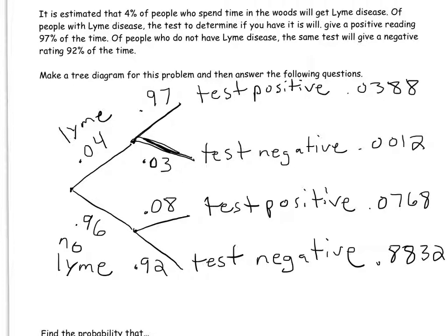The last thing to check is that those four probabilities at the end of the tree should add up to 1. If I go ahead and check: 0.0388 + 0.0012 + 0.0768 + 0.8832 — that all adds up to one. Great.